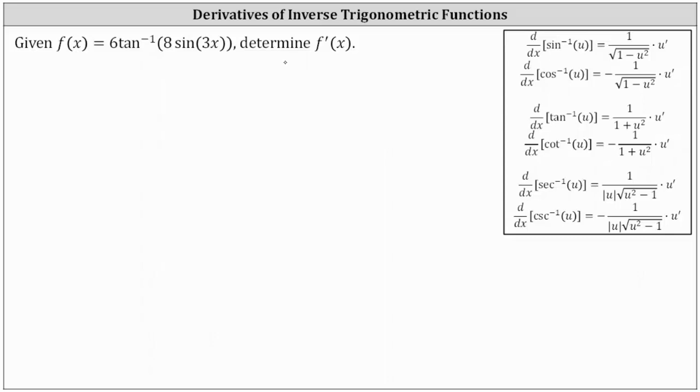First notice how we do have a composite function where the outer function is the inverse tangent function and the inner function is eight sine three x. And we often let u equal the inner function. So if u is equal to eight sine three x,